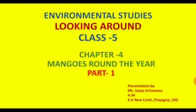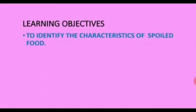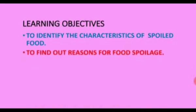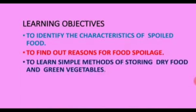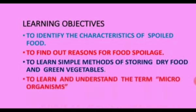In part 1 of this chapter, we are going to learn how to identify the characteristics of spoiled food. We will find out reasons for food spoilage. We will learn simple methods of storing dry food and green vegetables. We will also learn and understand the term micro-organisms.